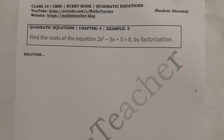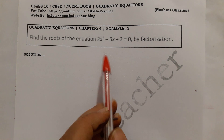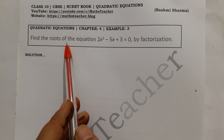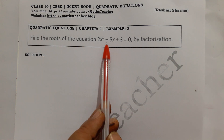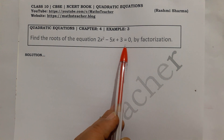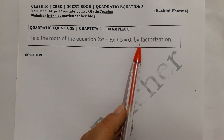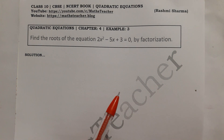Hello viewers, welcome to my channel. I am Rashmiya, a Maths teacher. Please subscribe to my channel and press the bell icon. Don't forget to solve chapter 4. From example number 3: find the roots of the equation 2x squared minus 5x plus 3 equal to 0 by the factorization method. So we have to solve this equation using the middle term splitting method.